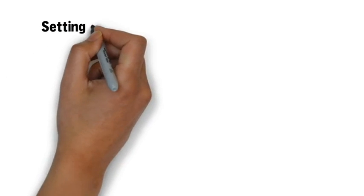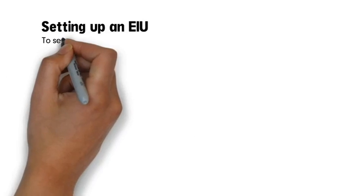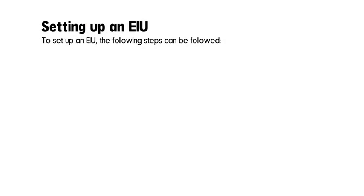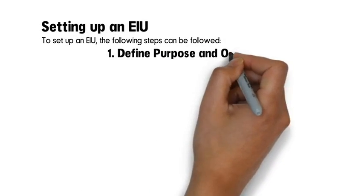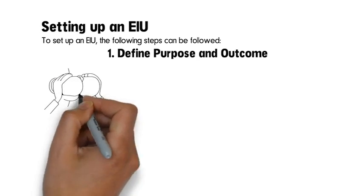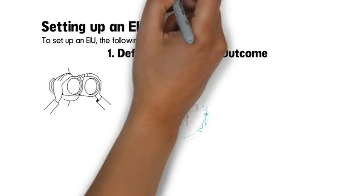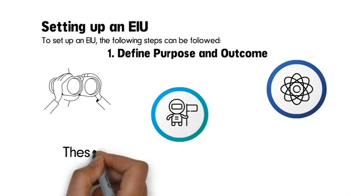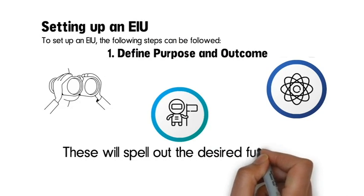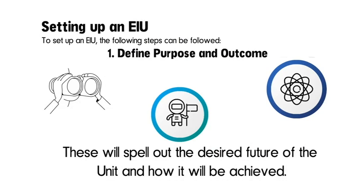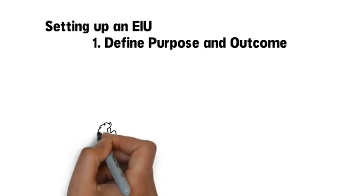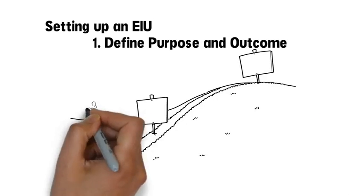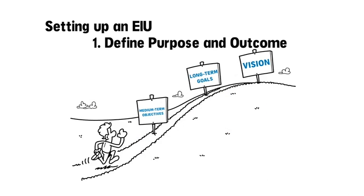Setting up an EIU. To set up an EIU, the following steps can be followed. First, define purpose and outcome: articulate the intended vision and mission statements of the unit including its core values. These will spell out the desired future of the unit and how it will be achieved. Set long-term goals and medium-term objectives, which will provide a roadmap for achieving the vision of the unit.